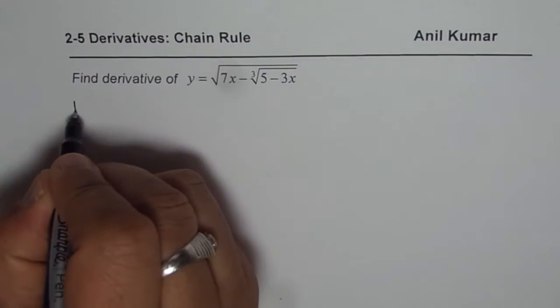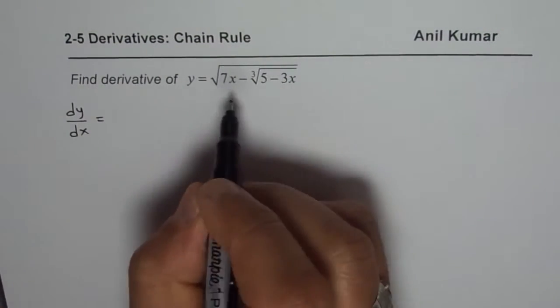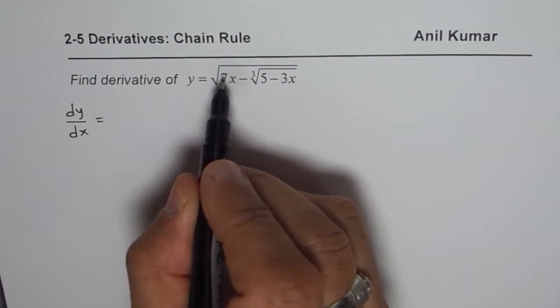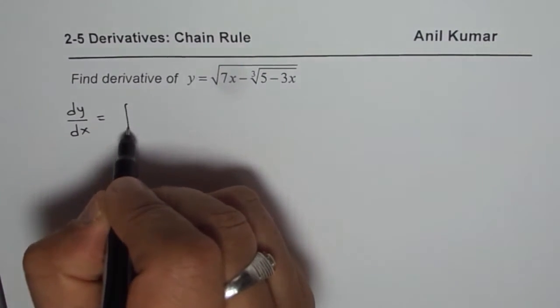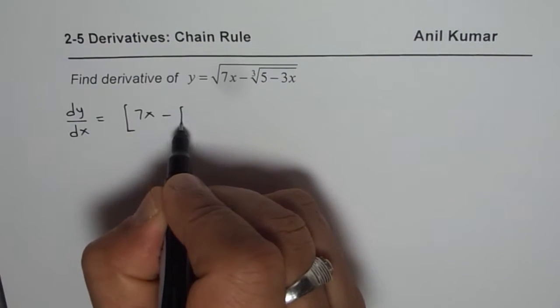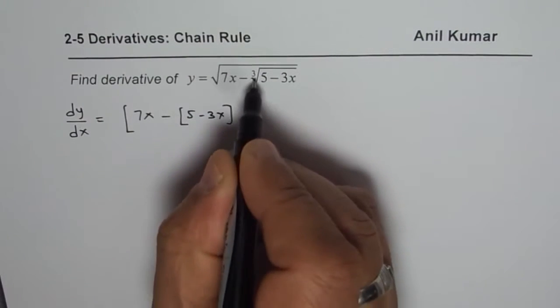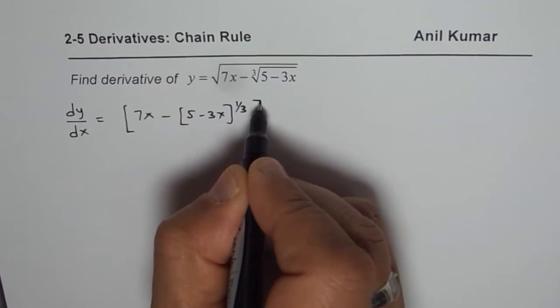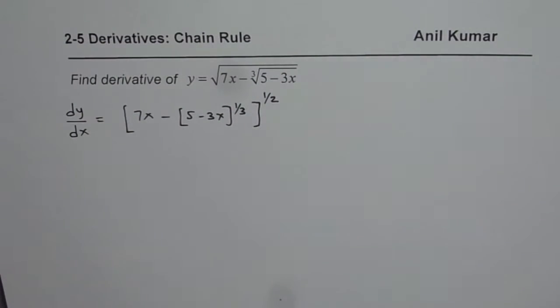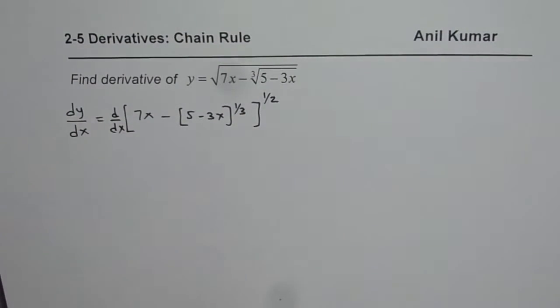So what is dy dx of this particular function? Let me first write this in exponent form, it will be easier. So we have 7x minus (5 minus 3x) to the power of 1/3, this is the third root. And everything is square root. So that is how the function is. We need to find d dx of this particular function.